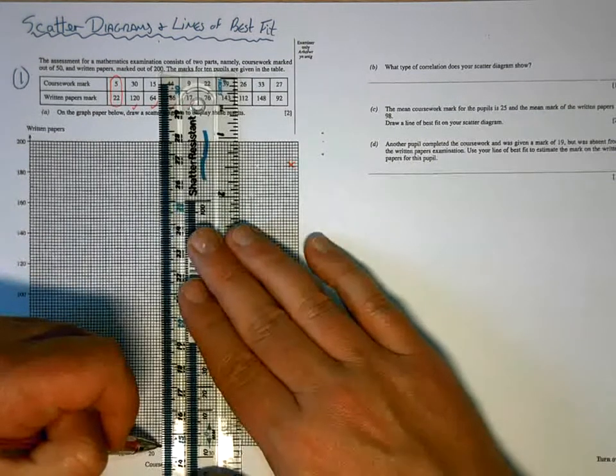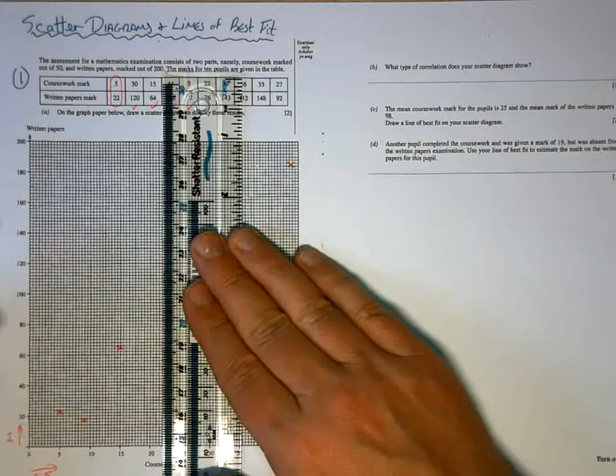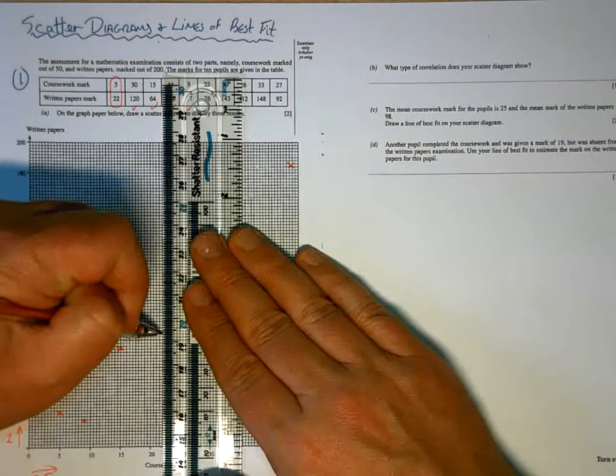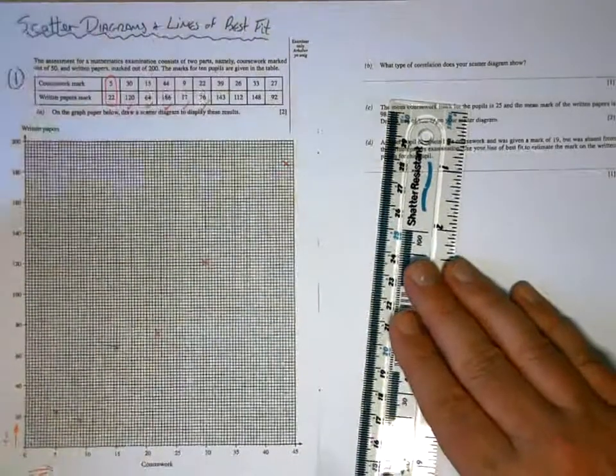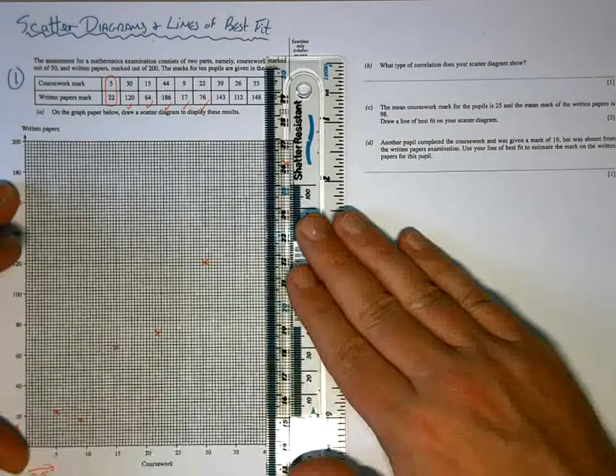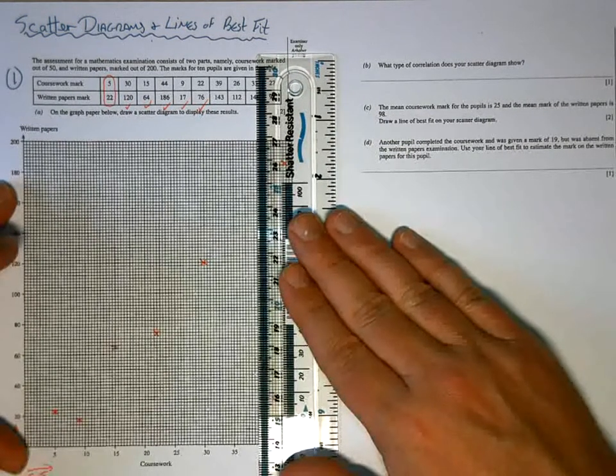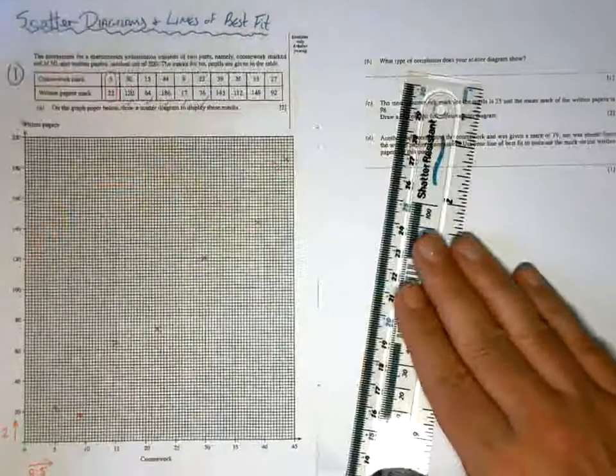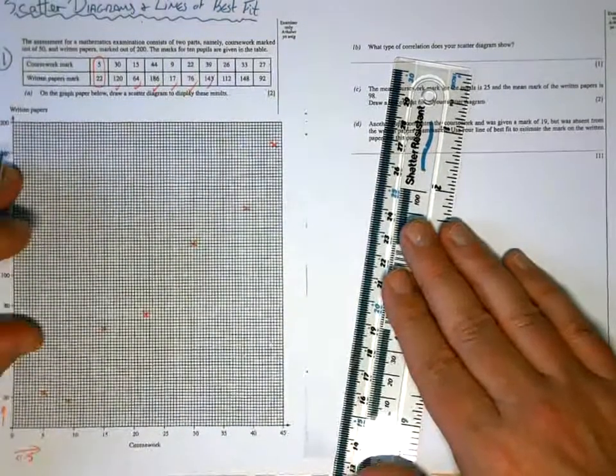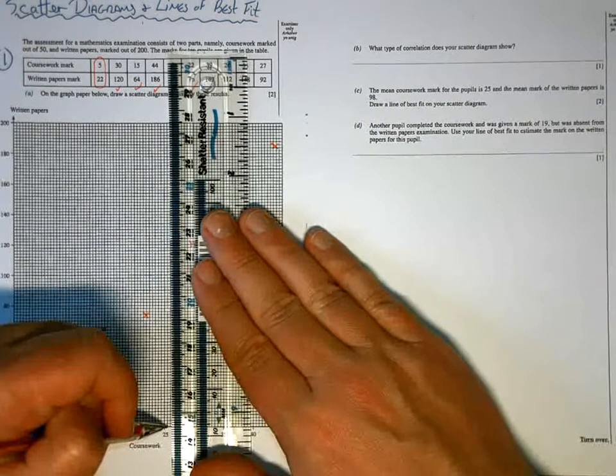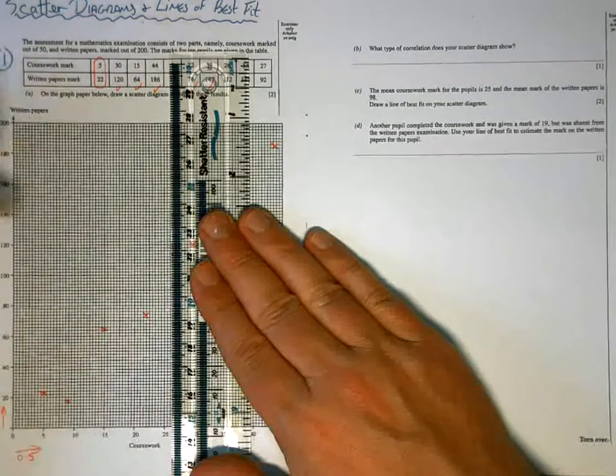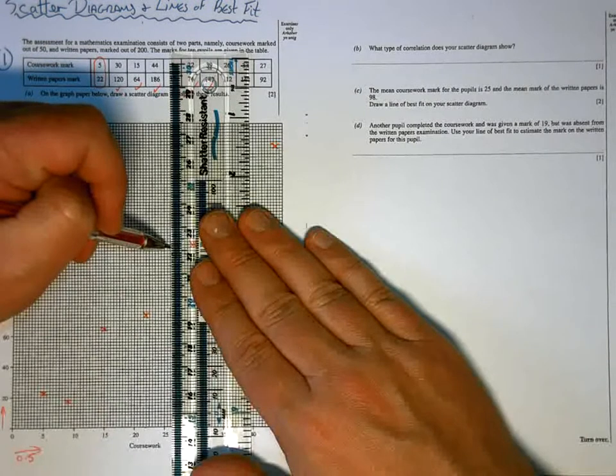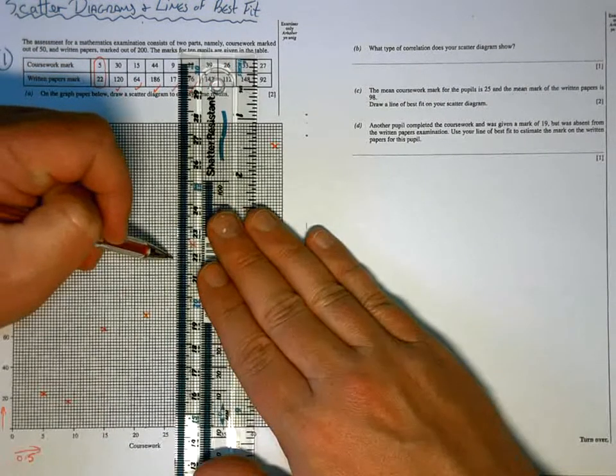Three, four squares. And 76 will be two down from 80. 39, 143. 39 will be two in from 40. 40, 143. 140, 142, 144. There. 26, 112. 25. So we've got two squares in from 25. And 112 will be 120, 18, 16, 14, 12. There.